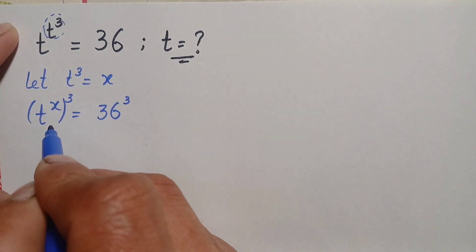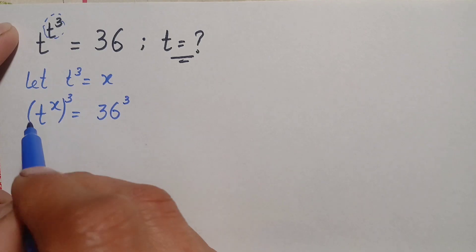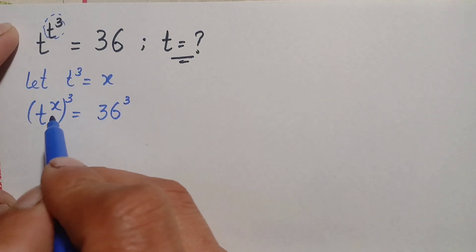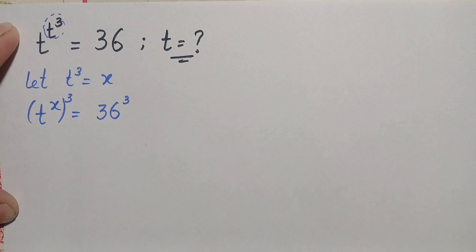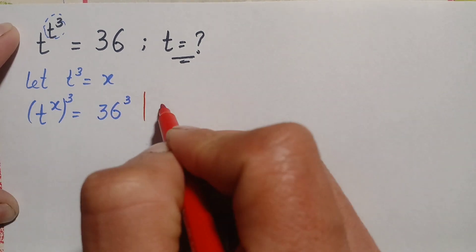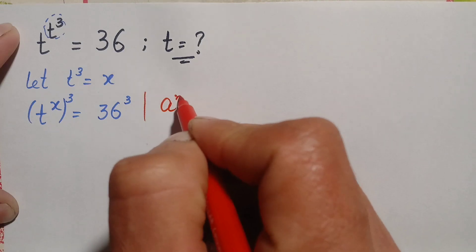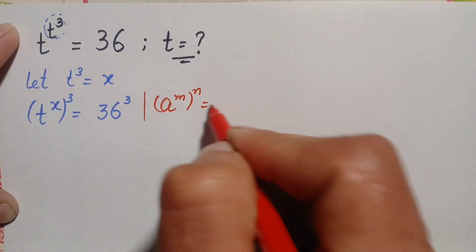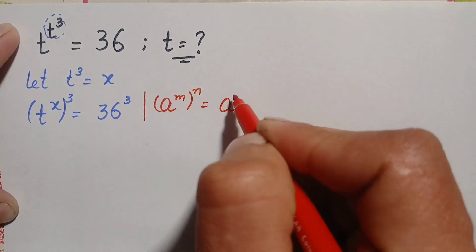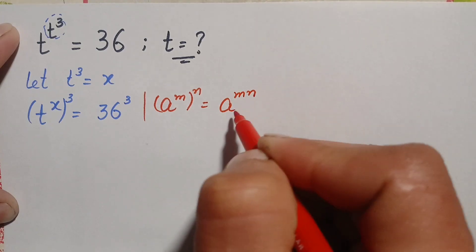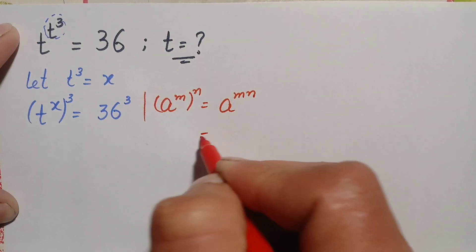Now we will take the cube on both sides. On the left hand side, we will use an exponential identity: a raised to power m raised to power n. We know that we can write a raised to power m raised to power n as a raised to power m times n — we multiply the powers.